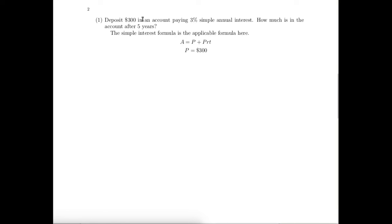$300 is deposited in the account, so that's the present value or the principal. We're given that the money is put into an account paying 3% simple annual interest. So 3% is R, which as a decimal is 0.03, and of course T is 5 because this is going to be in the account for five years.